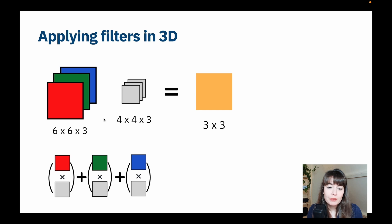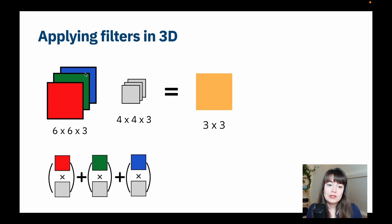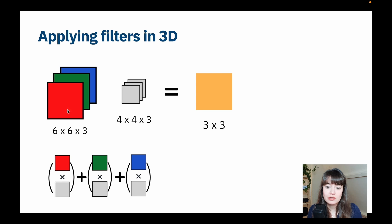The topmost filter is going to be traversed around the red layer. The second layer, corresponding to the green layer, is going to be traversed around the green layer. And then the lowest layer of the filter is going to be traversed around the blue layer. You're going to do it simultaneously, and then you combine or sum up the resulting values. At the end, you're going to have a resulting matrix that is only one dimensional.